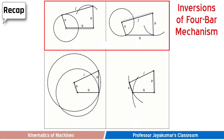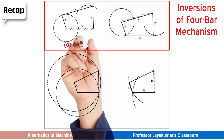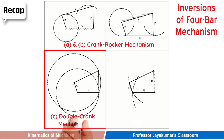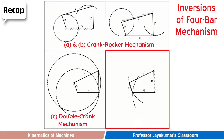Very interestingly, you can see the first 2 inversions form crank rocker, also known as crank lever mechanism. In the third diagram, two links of the 4-bar have rotational motion, and hence it forms double crank, also known as drag link mechanism. Finally, two links of the 4-bar chain oscillate, hence we call that mechanism double rocker or double lever mechanism.